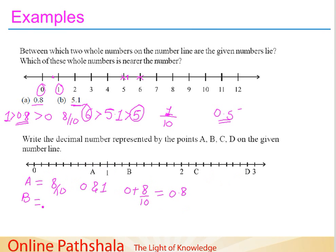Now let us solve for point B. B is at the 3rd part from 1, between 1 and 2. So it is 3 by 10 from 1, which means B is 1 plus 3 by 10, that is 1.3.